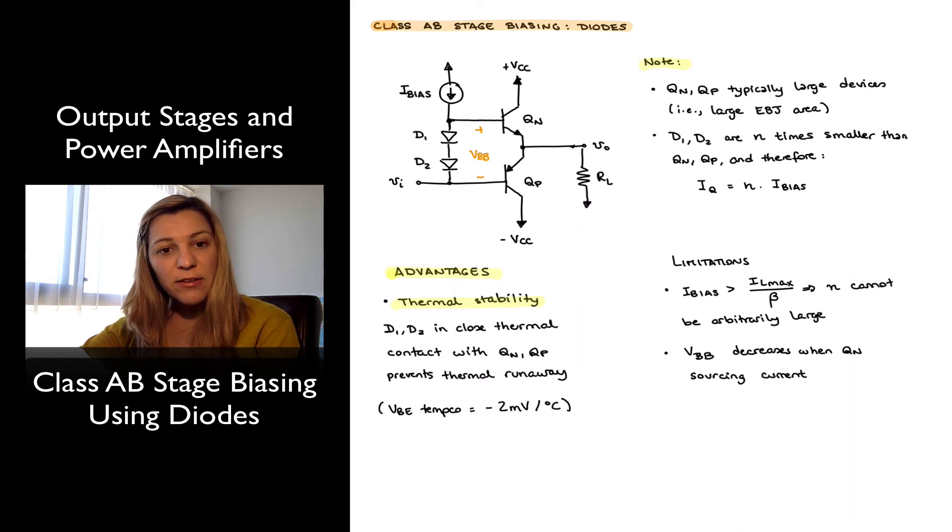Therefore reducing the VBE voltages of the output transistors, Qn and Qp, which in turn will reduce the amount of collector current flowing through those transistors. And so there is that sort of negative feedback mechanism, and what it's going to cause is for that collector current to remain approximately constant, as opposed to continue to increase with temperature. So that's a good advantage of this configuration.